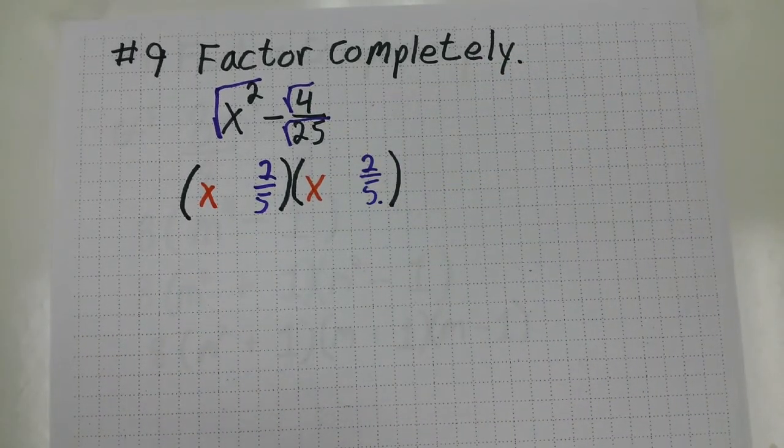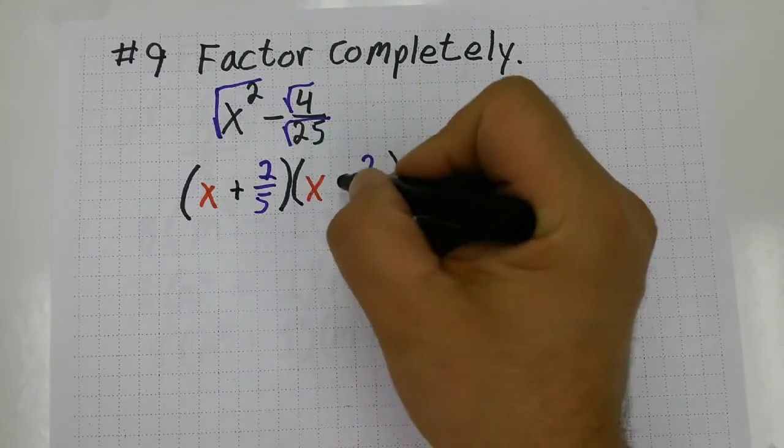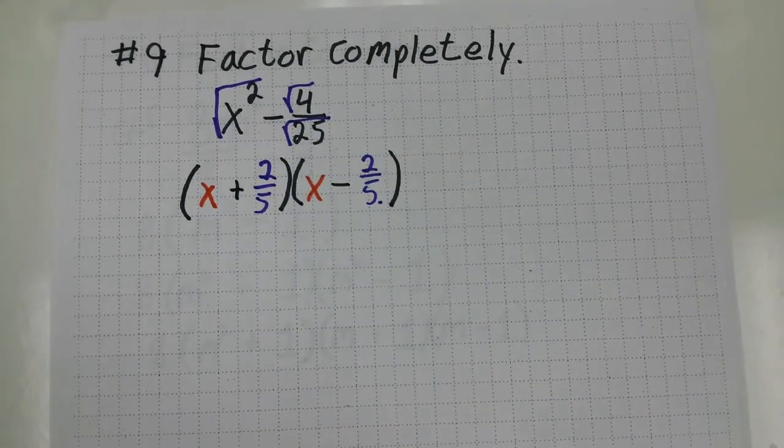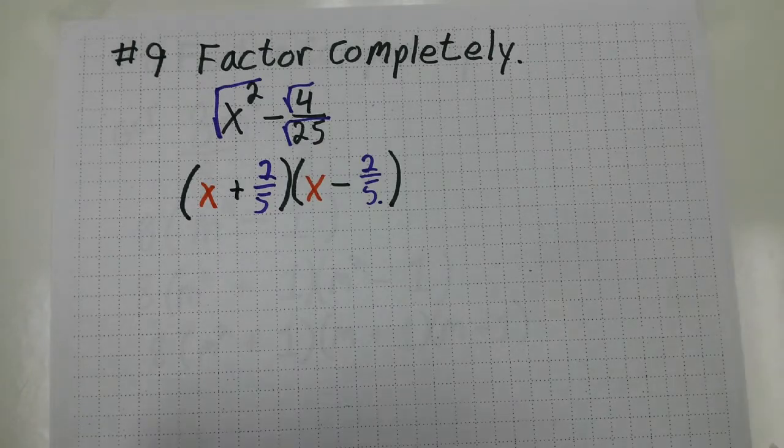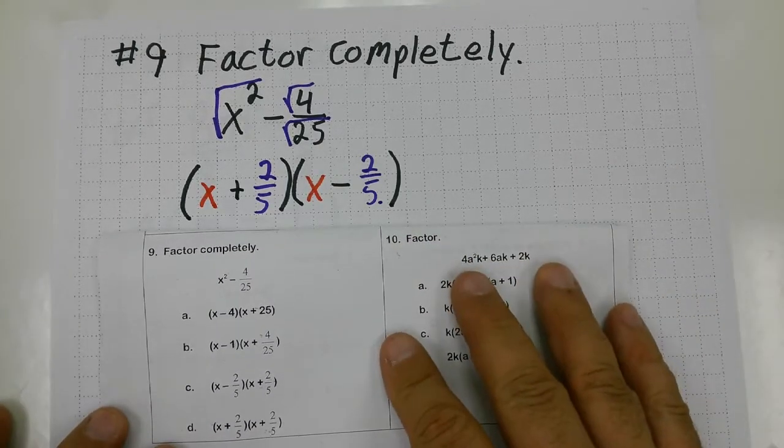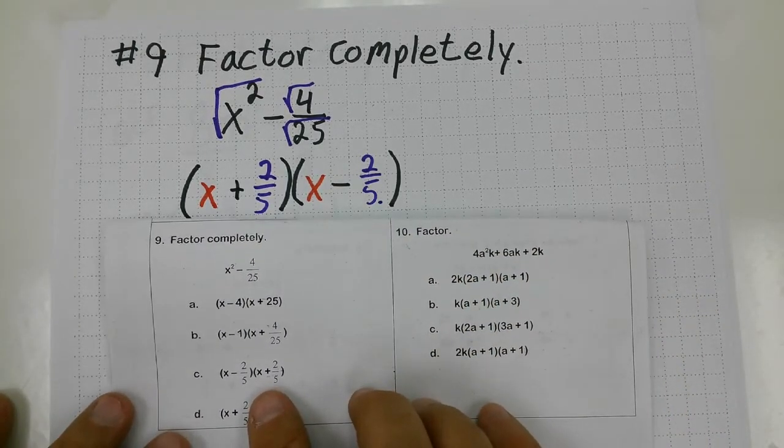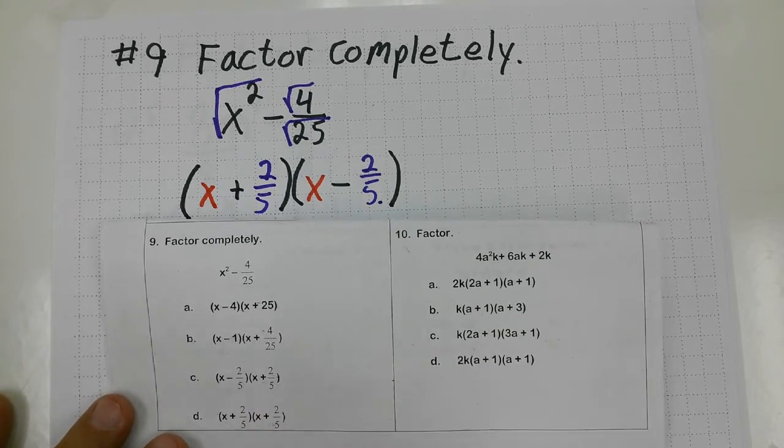And it's a difference of two perfect squares, so the symbols are going to alternate plus minus. Let's see if that lines up with any of our choices. And yes, it does. Choice C from the PERT practice test for number nine.